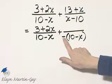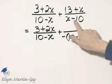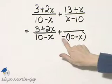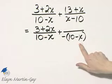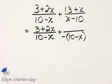Now watch, I haven't changed anything. Negative times 10, that's negative 10, which is what I have, and a negative times a negative is positive, so that's positive x, and that's what I have.